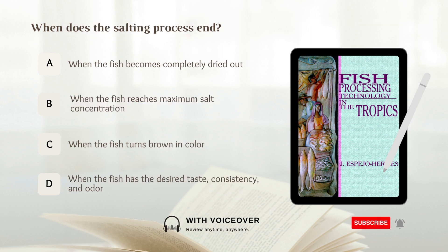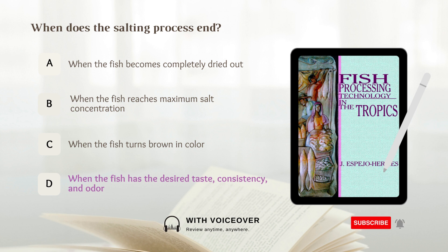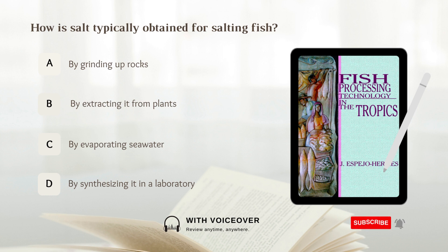When does the salting process end? A. When the fish becomes completely dried out. B. When the fish reaches maximum salt concentration. C. When the fish turns brown in color. D. When the fish has the desired taste, consistency, and odor. Answer: D. When the fish has the desired taste, consistency, and odor.